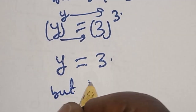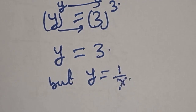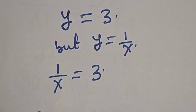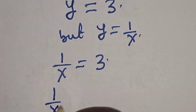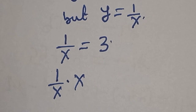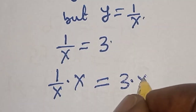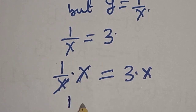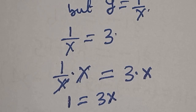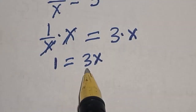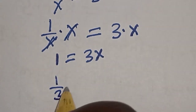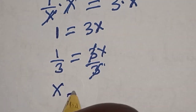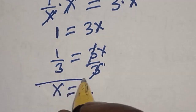But y is equal to 1 over x. Now 1 over x is equal to 3. Let's multiply all through by x. We have 1 over x multiplied by x is equal to 3 multiplied by x. This will cancel, giving 1 is equal to 3x. We are looking for the value of x, so let's divide both sides by 3. Therefore x is equal to 1 divided by 3. That is our final answer.